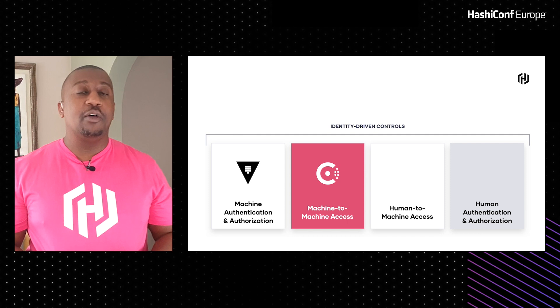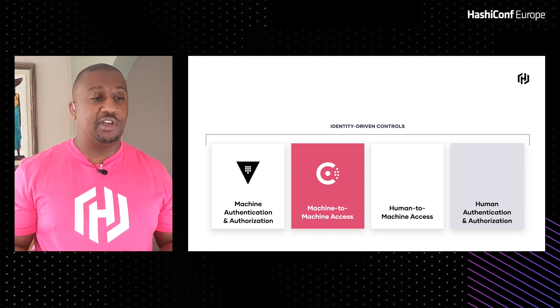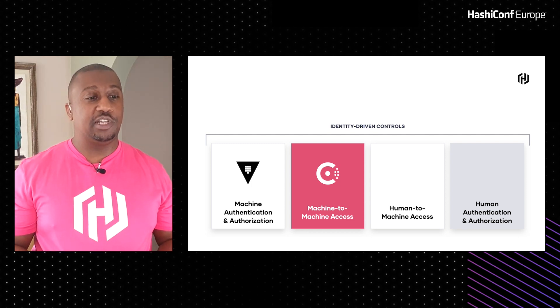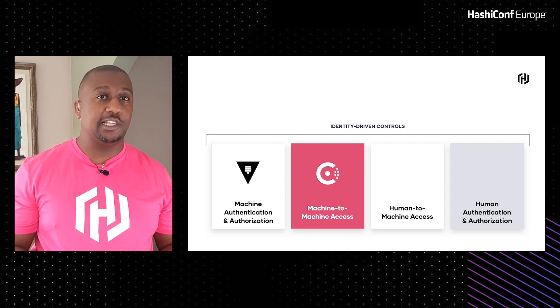So we've explained how to do machine authentication and authorization. Now we move into the second pillar of zero trust: controlling machine-to-machine access. We've talked about how to get credentials into the application; now we're talking about the actual communication between two different machines, and we want to leverage identity-driven controls for that networking.